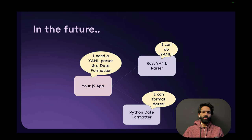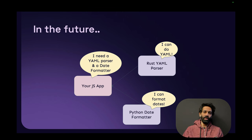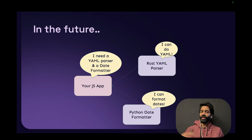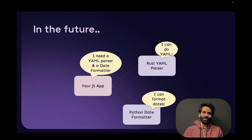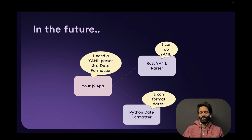All of this is going to change with something called the component model. In the future, if you're building a JavaScript app, you can say something like 'I need a YAML parser' and you can actually grab a YAML parser written in Rust, because Rust is good at doing things like parsing since it is a low-level language. Similarly, you can say 'I need a date formatter' and use a Python library — because Python is good with numbers — and all of this in your JavaScript app.